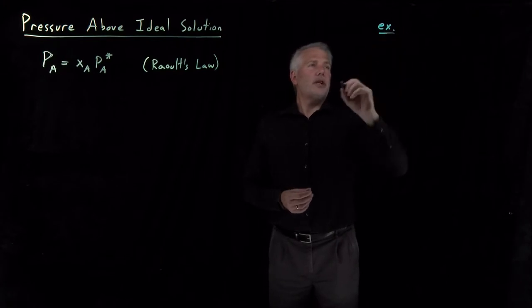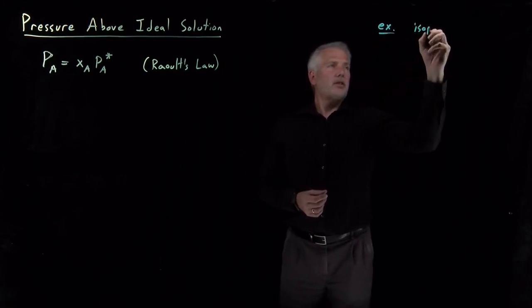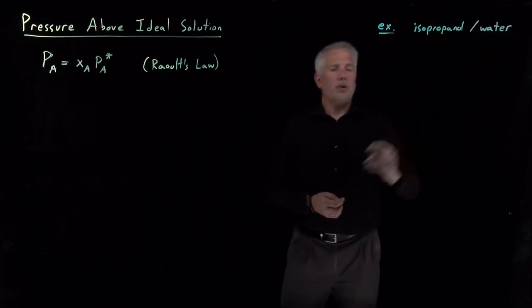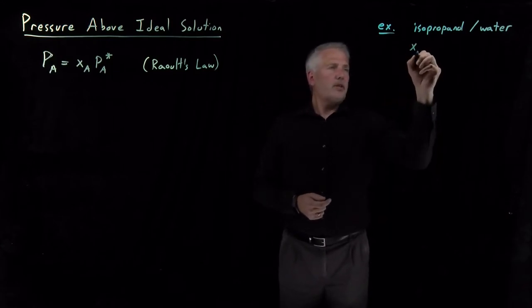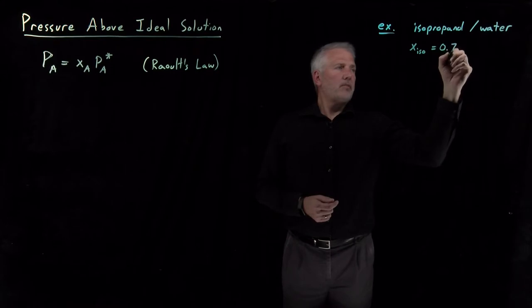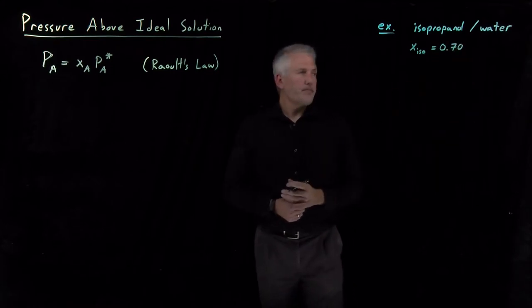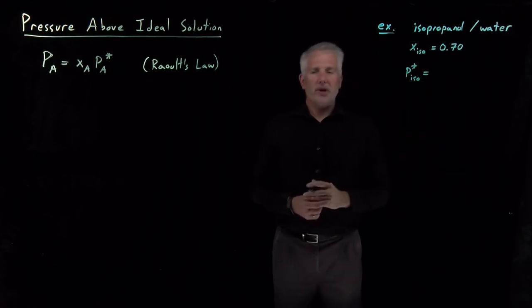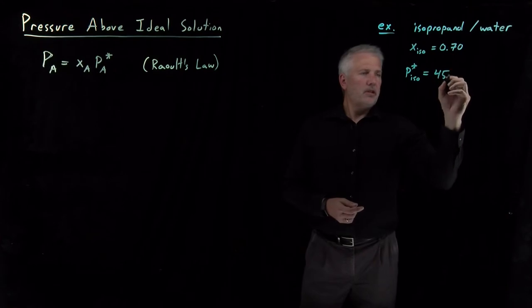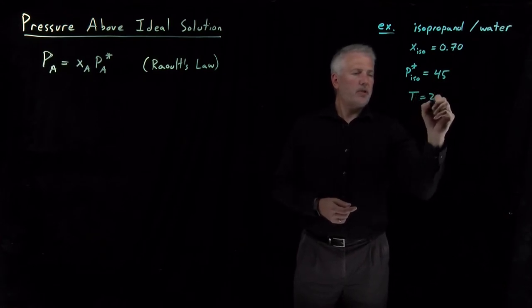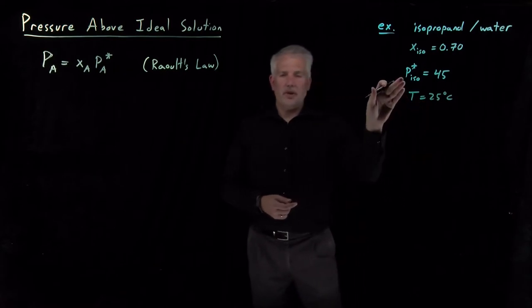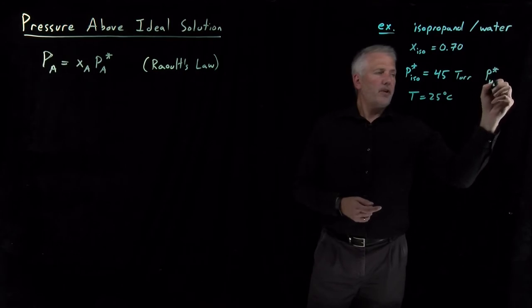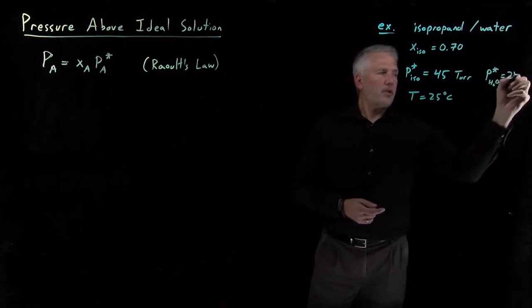For an example, let's consider a mixture of two liquids — two solvents, isopropanol and water. The mole fraction of isopropanol is 70%. At 25 degrees Celsius, the vapor pressure of isopropanol is 45 torr, and the vapor pressure of water is 24 torr.